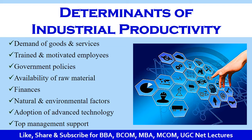The raw material required to produce finished goods should be easily available, and its quality should also be high. In order to improve industrial productivity, the organization should have proper funds. Natural and environmental factors like climate, pandemics like COVID-19, floods, etc. also influence industrial productivity. Adapting to modern methods and advanced technology is also important to improve industrial productivity.